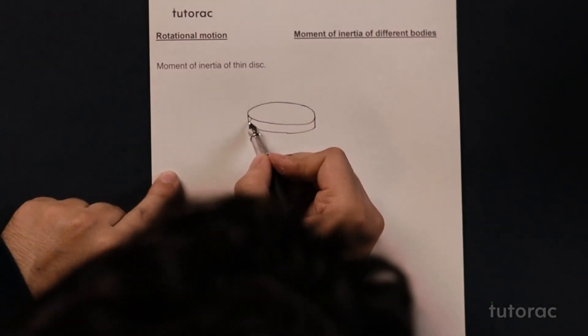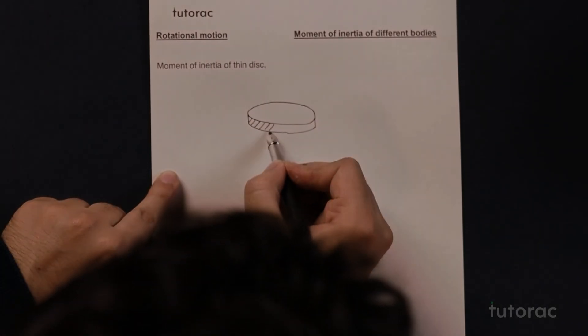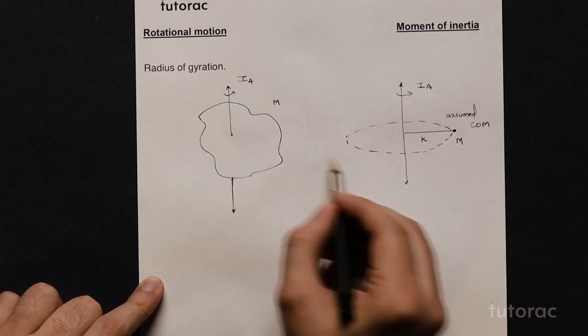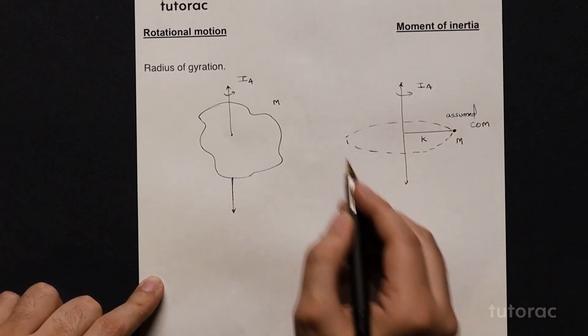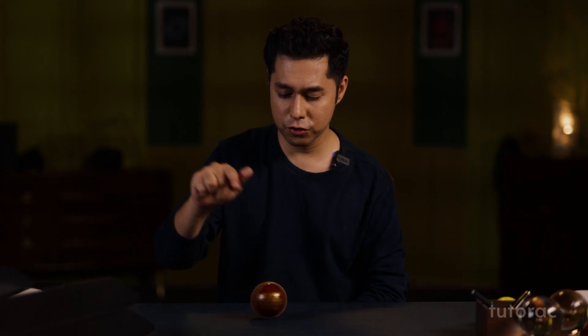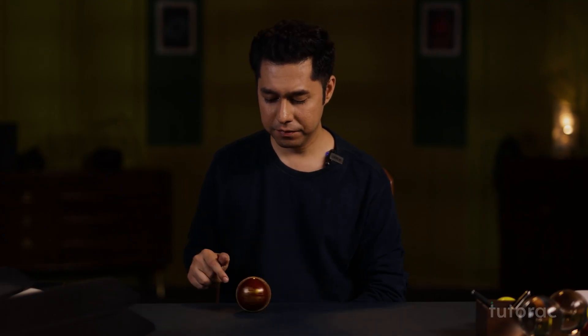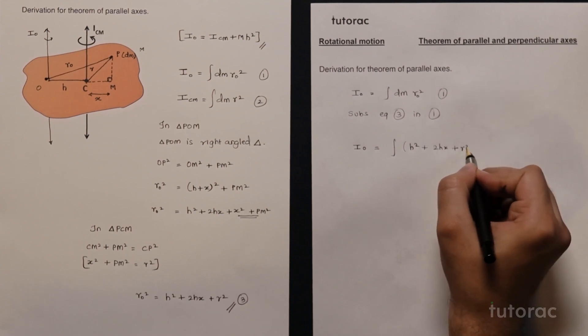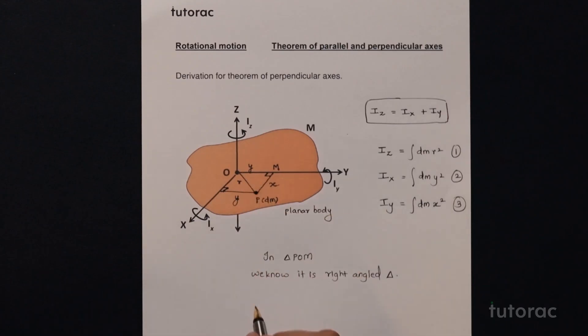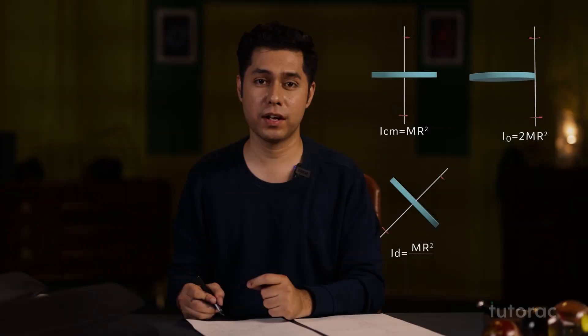The core topics of the chapter include the concept of moment of inertia, rotational motion, and radius of gyration. We would also be studying the moment of inertia of different bodies, as well as the theorems of parallel axis and perpendicular axis, and their applications.